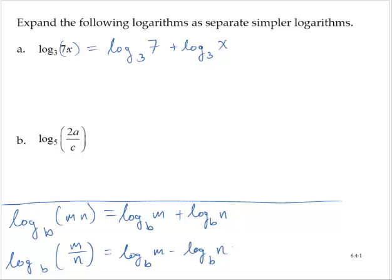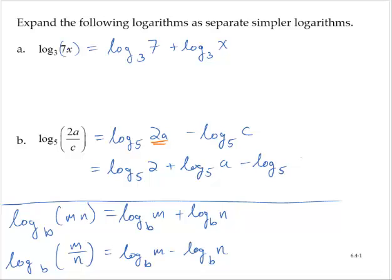So for Exercise B, log base 5 of 2a over c, I can write that as the log base 5 of 2a subtract the log base 5 of c. But this is not in the simplest form using the simplest logarithms, because I have a product of logarithms. And so using the first property that I mentioned, I would have the log base 5 of 2 plus the log base 5 of a subtract the log base 5 of c.